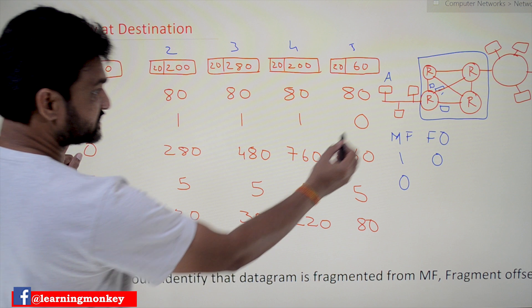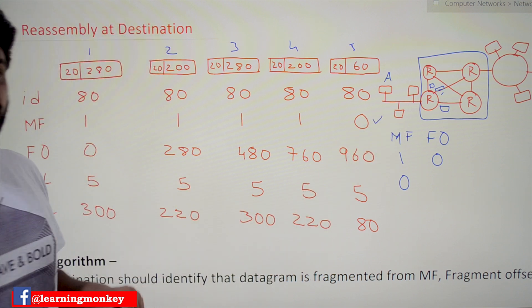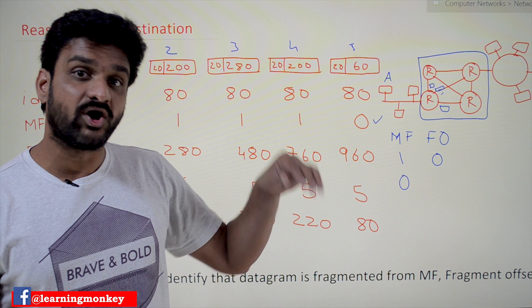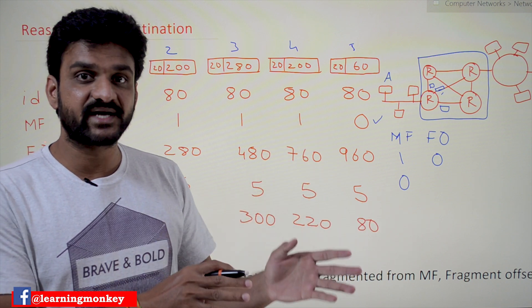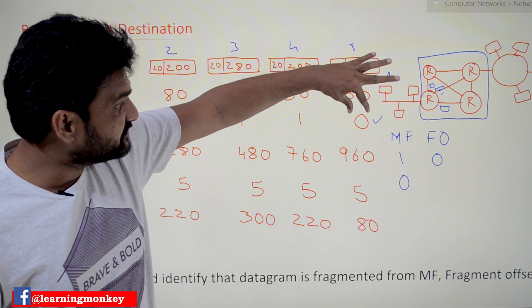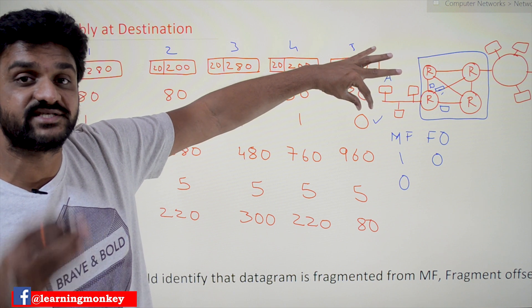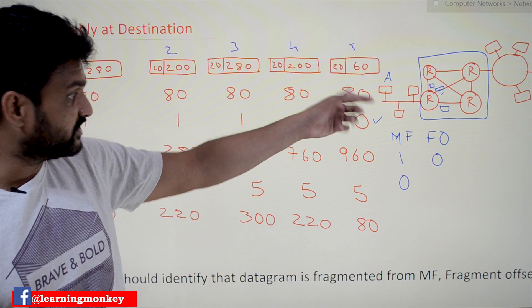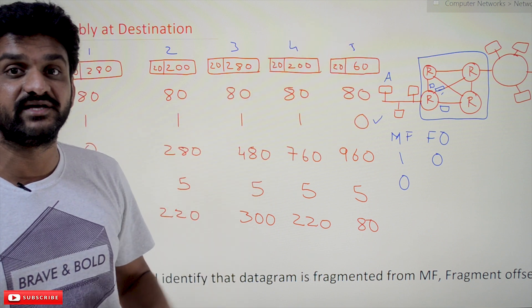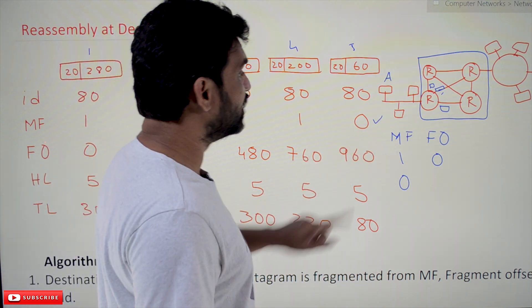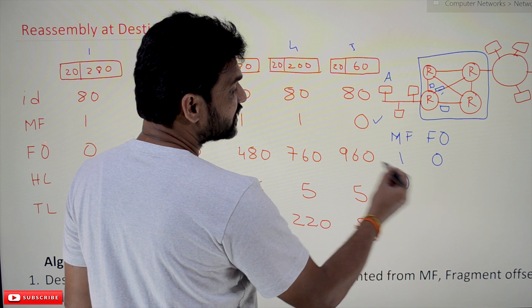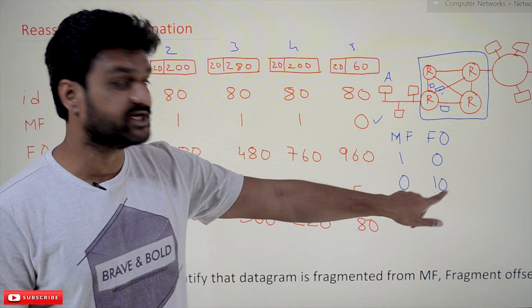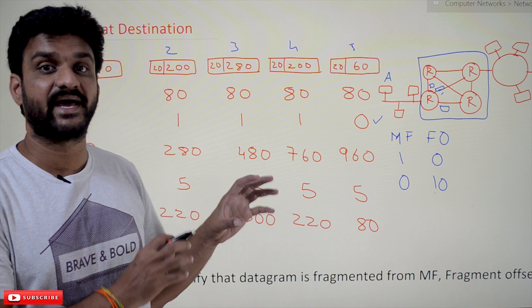If MF is equal to 0, does it mean this is the one and only packet with no fragments? No, we cannot decide that. If MF is equal to 0 and the offset value is other than zero, it means that this is going to be the last fragment.